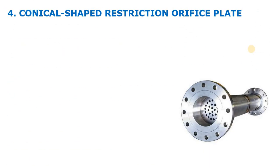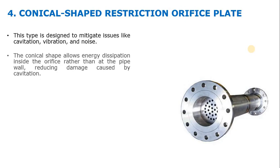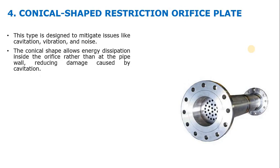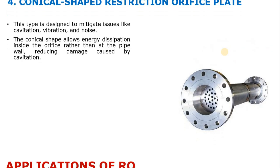There is also the conical shaped restriction orifice, which is designed to mitigate issues like cavitation, vibration, and noise. It transitions from a larger size to a smaller size — for example three inch to two inch — so one side is bigger and the other side is smaller.